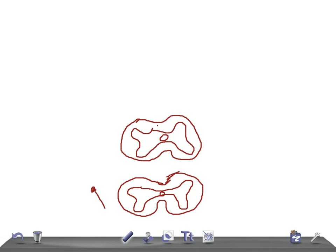Let me draw the posterior root ganglion. This is the posterior root ganglion, and we have pain and temperature receptors — P and T receptors. This is the first order neuron; the posterior root ganglion is the first order neuron.